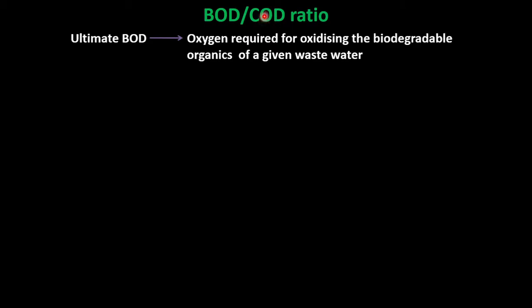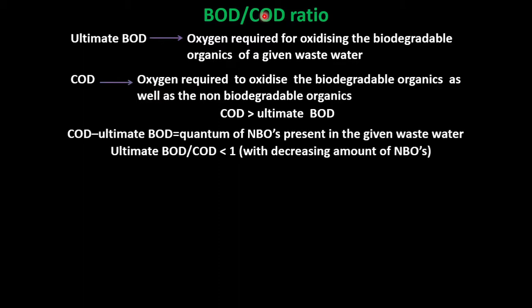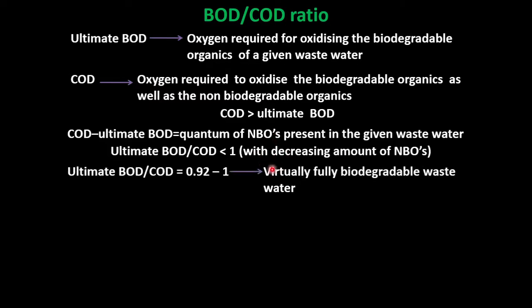When the BOD to COD ratio is between 0.92 and 1, the wastewater can be considered virtually fully biodegradable. If the ratio is quite low, we may choose chemical or biological treatment. When the ratio is between 0.92 and 1 — that is, fully biodegradable — we apply biological treatment.